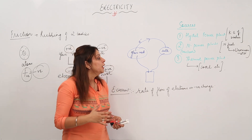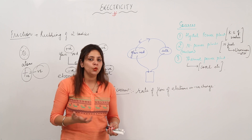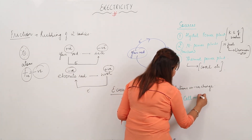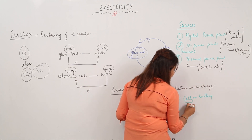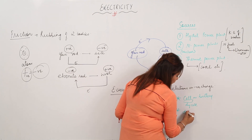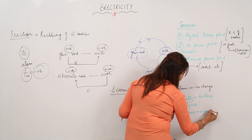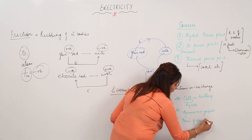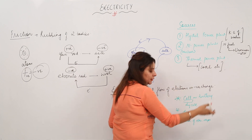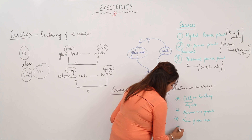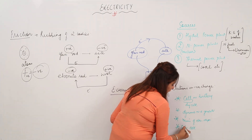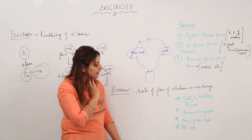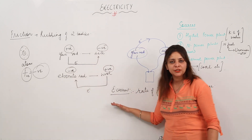On a small scale, the sources of electricity for us include a cell or battery — a common example is the dry cell. It can also be a dynamo, that is an electric generator, or the mains supply from the electricity department, which generates electricity centrally and supplies it to homes. And moreover, it can be a solar cell, which works on solar energy. We will discuss all of these in detail.